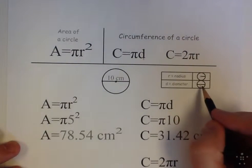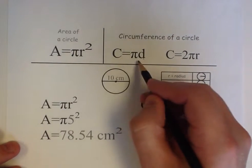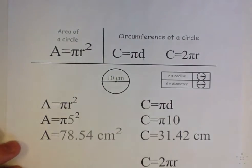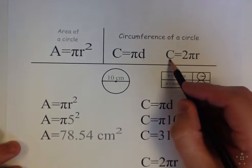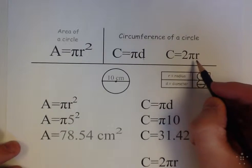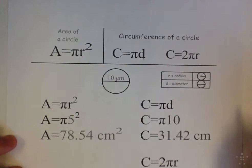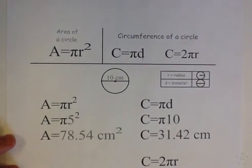So if they give you what the diameter is, you'll want to use this one: C equals pi times the diameter. If they give you the radius, you can simply use this formula: the circumference equals 2 times pi times the radius. Either way, you'll get the same answer.